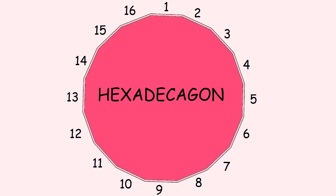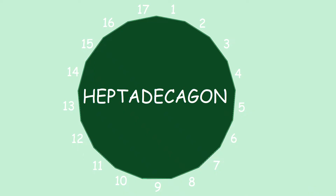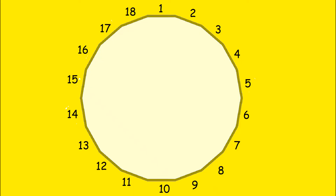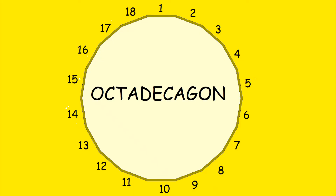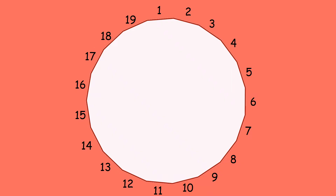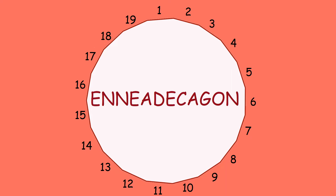What's a sixteen-sided shape? Hexadecagon! What's a seventeen-sided shape? Heptadecagon! What's an eighteen-sided shape? Octadecagon! What's a nineteen-sided shape? A Enneadecagon!